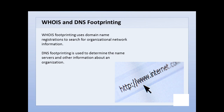WHOIS footprinting basically uses registration information from when a domain name is bought and registered. A lot of this information has typically been public and easily accessible, although recently we're starting to see ways that information can be kept private through the registrar. DNS footprinting is used to determine similar information about the organization, like the name servers and other infrastructure information. It's good to use both and cross-check to make sure you have the most current and accurate information.